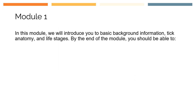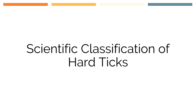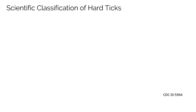In this module we will introduce you to basic background information, tick anatomy and life stages. By the end of the module you should be able to differentiate between life stages and use terminology about the anatomy of ticks. This training is focused on the identification of hard ticks, since the main species that transmit pathogens to humans and animals in the Midwest and Northeast of the United States are in this family. The soft ticks have different feeding patterns and anatomical differences that we will not cover.